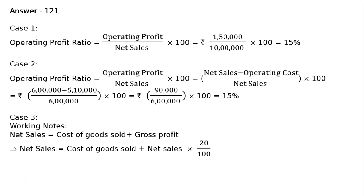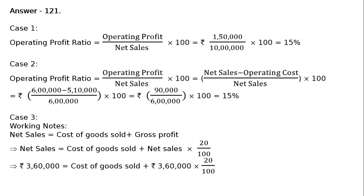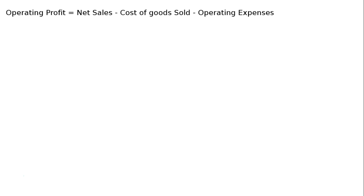Because gross profit in case 3 is 20% on sales, we multiply 20% to net sales. This implies Rs. 3,60,000 is equal to cost of goods sold plus Rs. 3,60,000 multiplied by 20%, which implies cost of goods sold is equal to Rs. 2,88,000. This is cost of goods sold. Now, operating profit is equal to net sales minus cost of goods sold minus operating expenses: Rs. 3,60,000 minus Rs. 2,88,000 minus Rs. 18,000 is equal to Rs. 54,000.